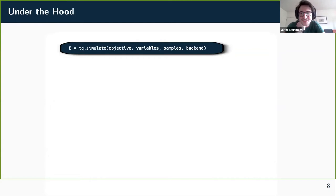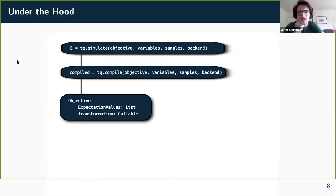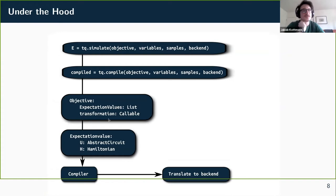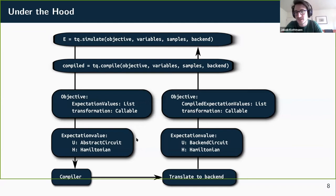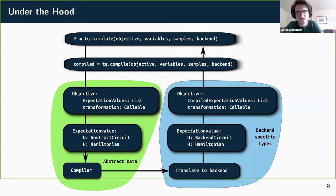When you have one objective and hit simulate, the abstract objective — which has lists of expectation values and callable transformations — is compiled and translated to one of the backends, like Qiskit or the QLAC simulator. What you get back is the same objective structure, just with circuits that are no longer abstract — they're the actual simulator package circuit type. If you're trying to do something like an optimizer, it usually makes sense to hit the compile function first, to avoid re-translating to the same backend every time you run it.